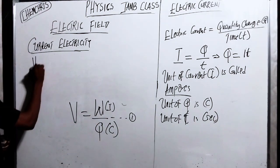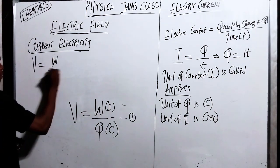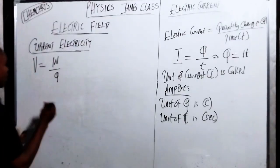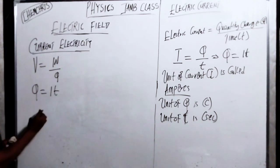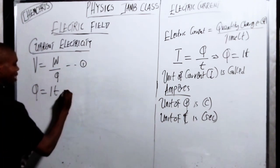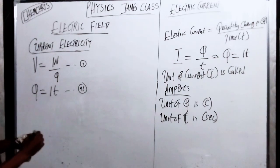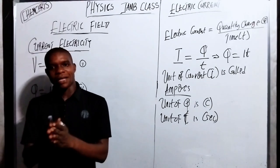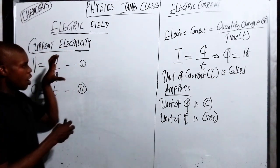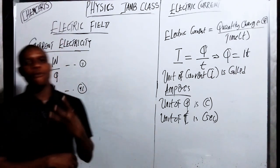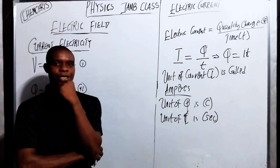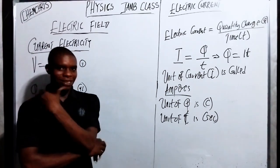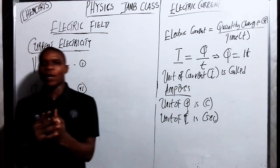Now connecting the voltage formula: V equals W over Q. From this, Q equals I times t, so we can substitute. These are the three key formulas you need to calculate questions under current electricity. Now let's look at some questions before we move on to electric circuits.